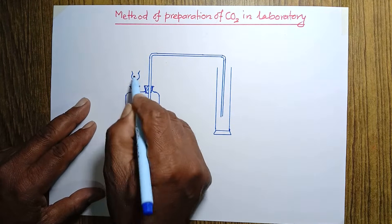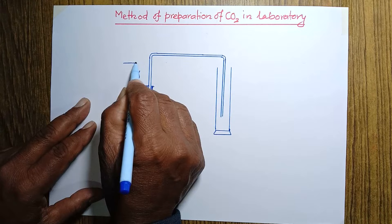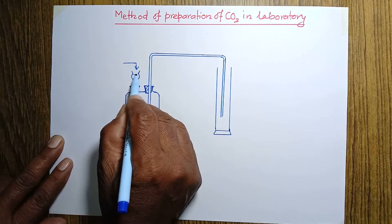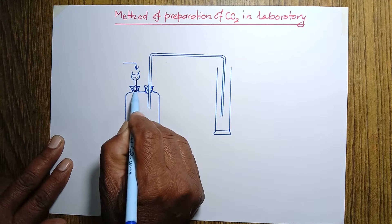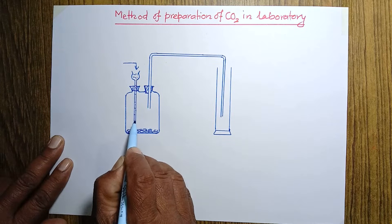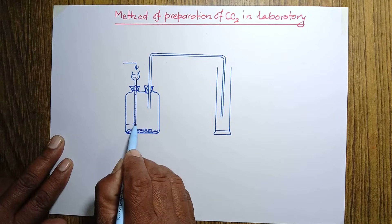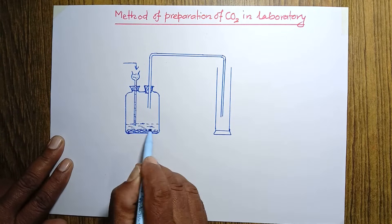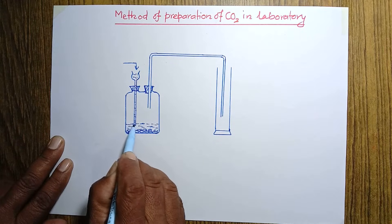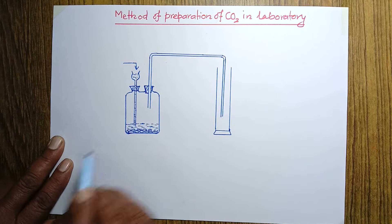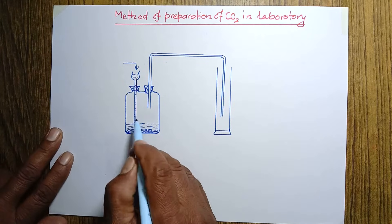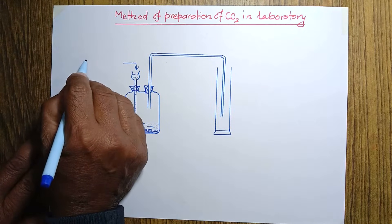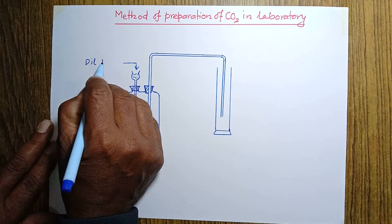We have to pour dilute hydrochloric acid from this thistle funnel. When we pour this dilute hydrochloric acid it comes into the wolf bottle. The dilute hydrochloric acid should be poured in such a way that the tip of the thistle funnel should be inside the dilute hydrochloric acid. Otherwise the carbon dioxide gas produced in the reaction comes out. So here I am labeling this as dilute HCl.